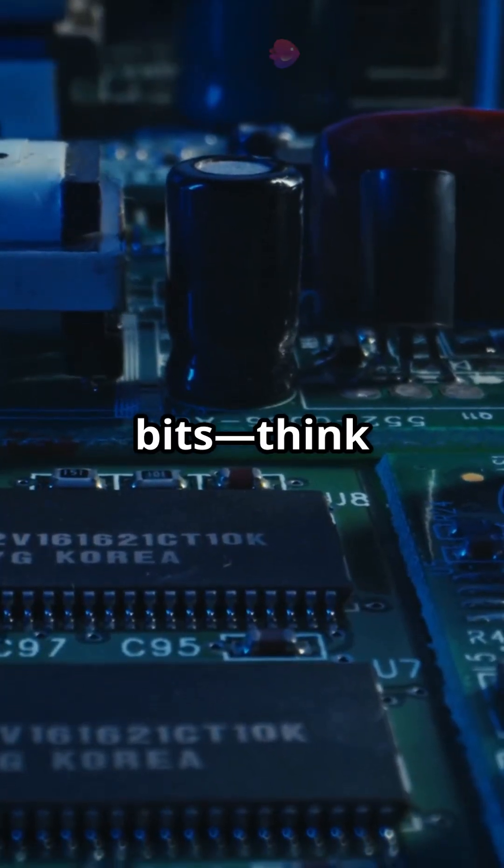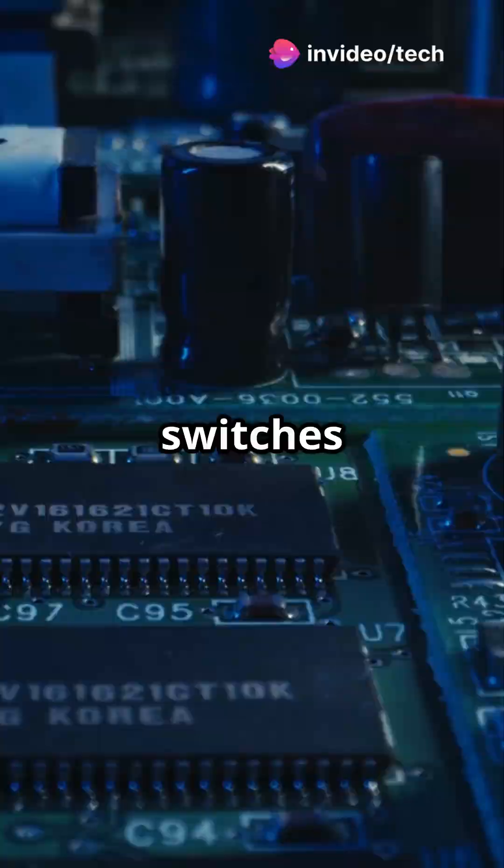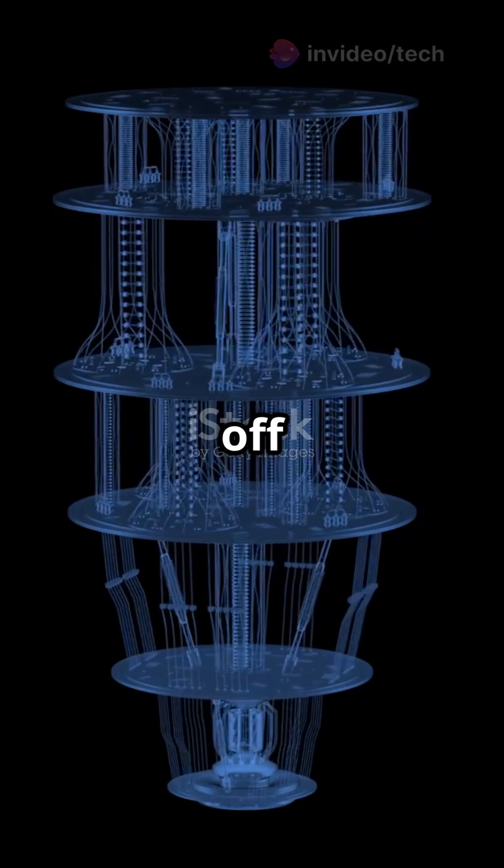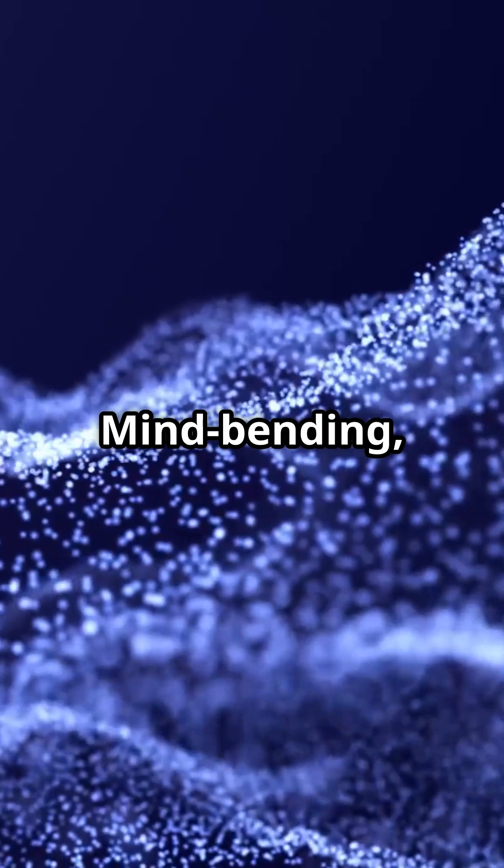Traditional computers use bits. Think of them like tiny switches that are either on or off. But quantum computers use qubits which can be both on and off at the same time. Mind-bending, right?